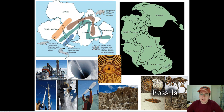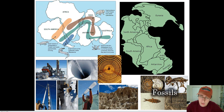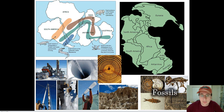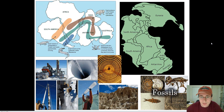So, climatological evidence, puzzle piece evidence of the continents, fossilized evidence, and rock formation evidence — all put together — gave Alfred Wegener a really good idea that the continents used to be together in what's called a supercontinent: in this case, Pangaea.